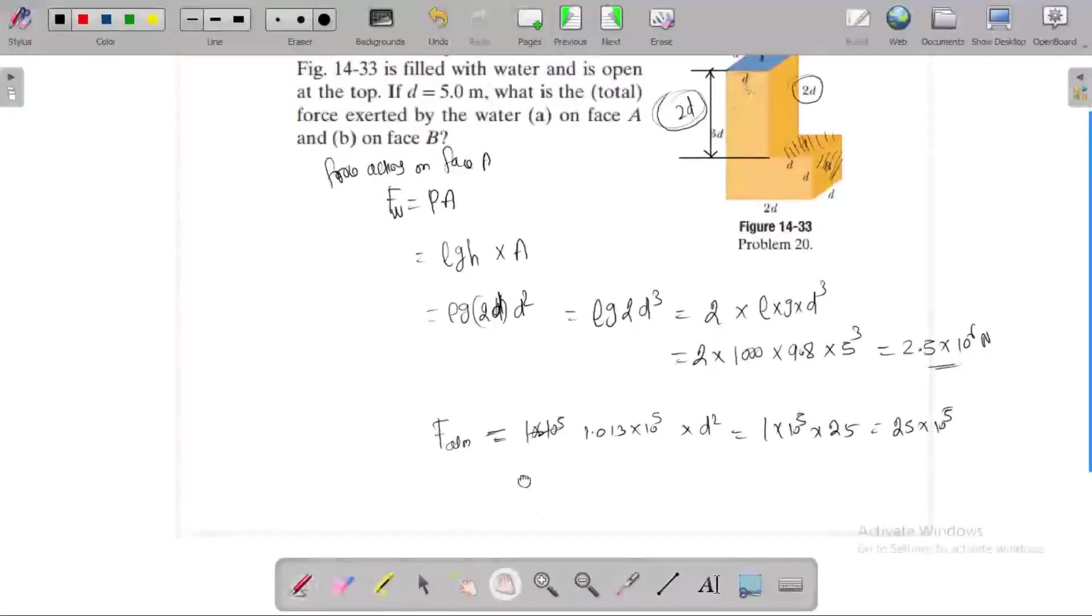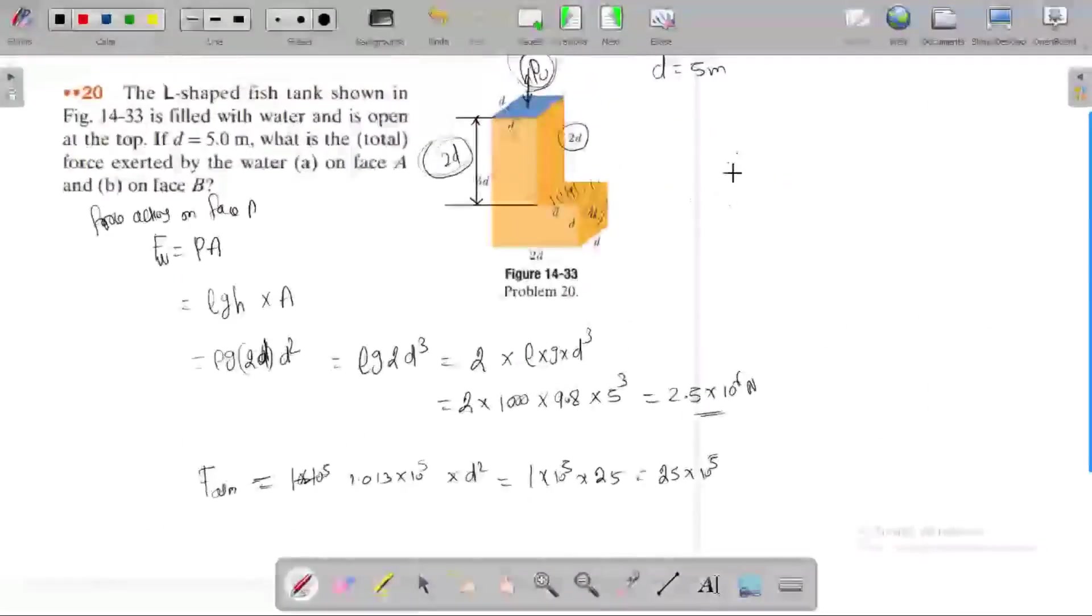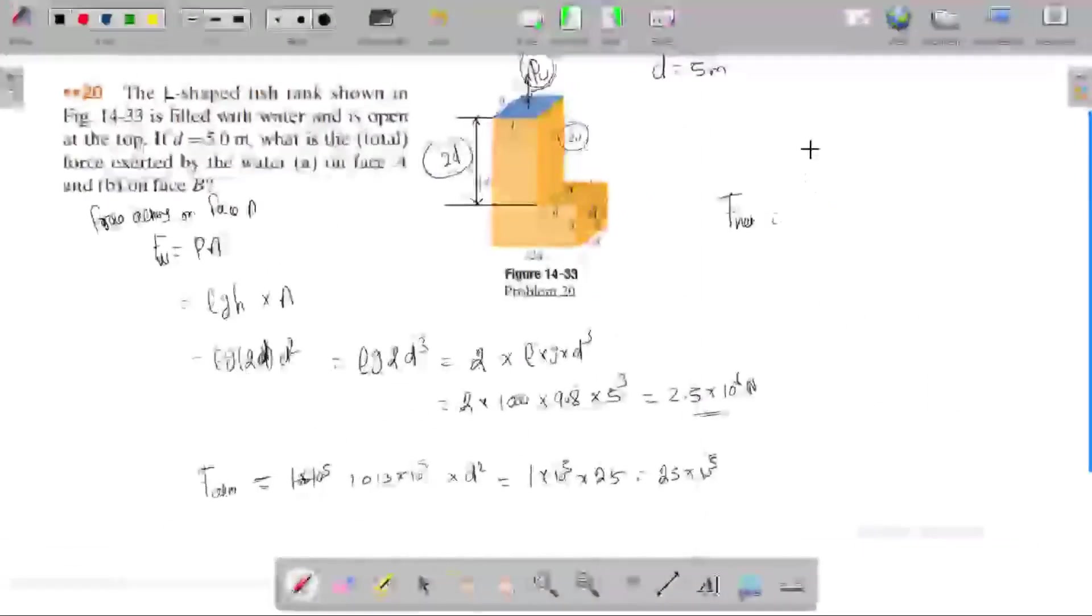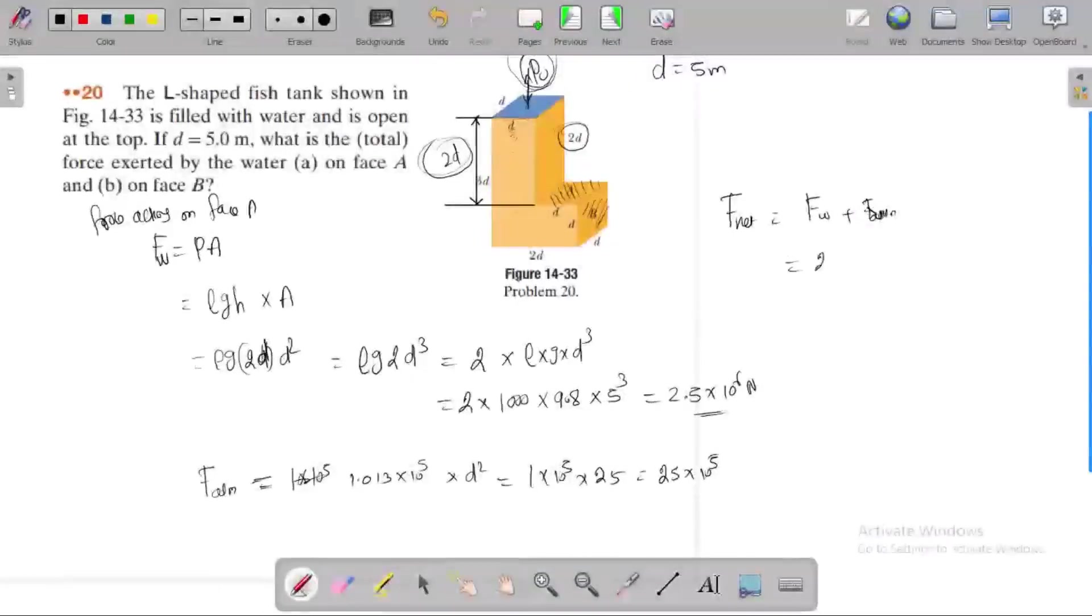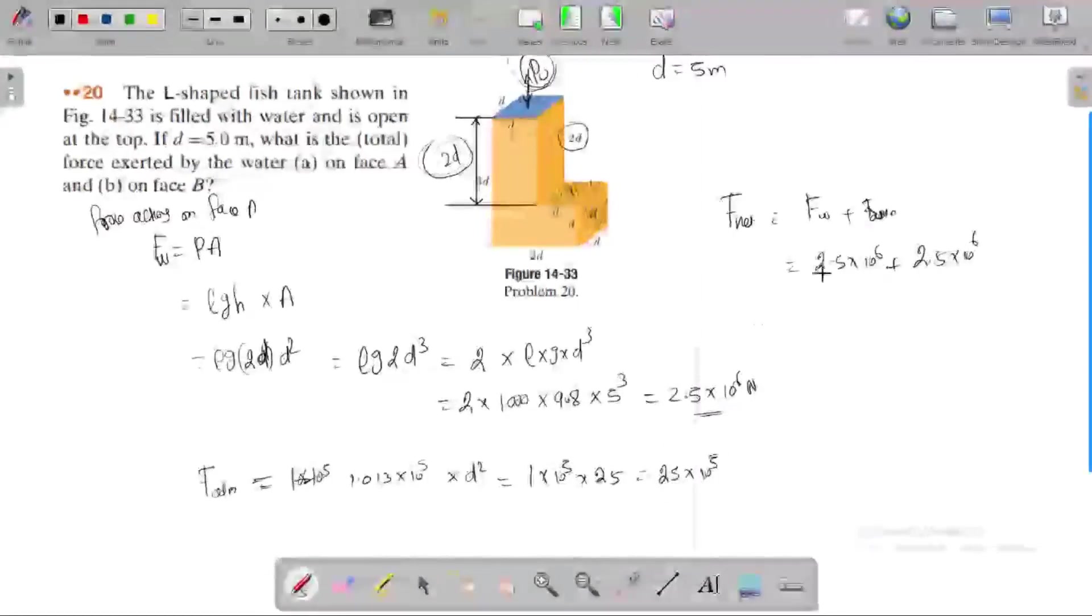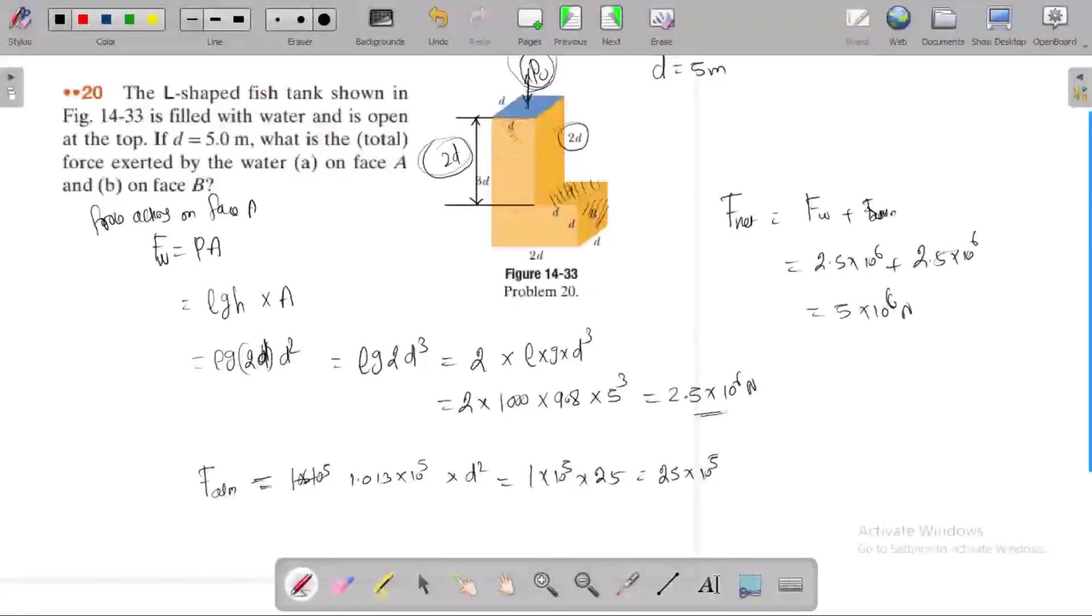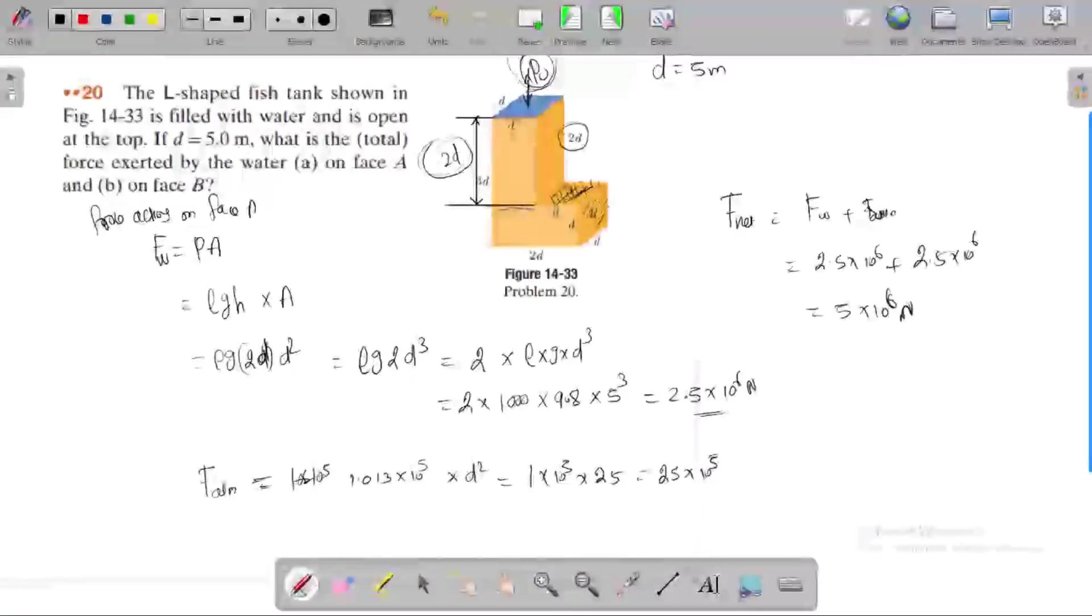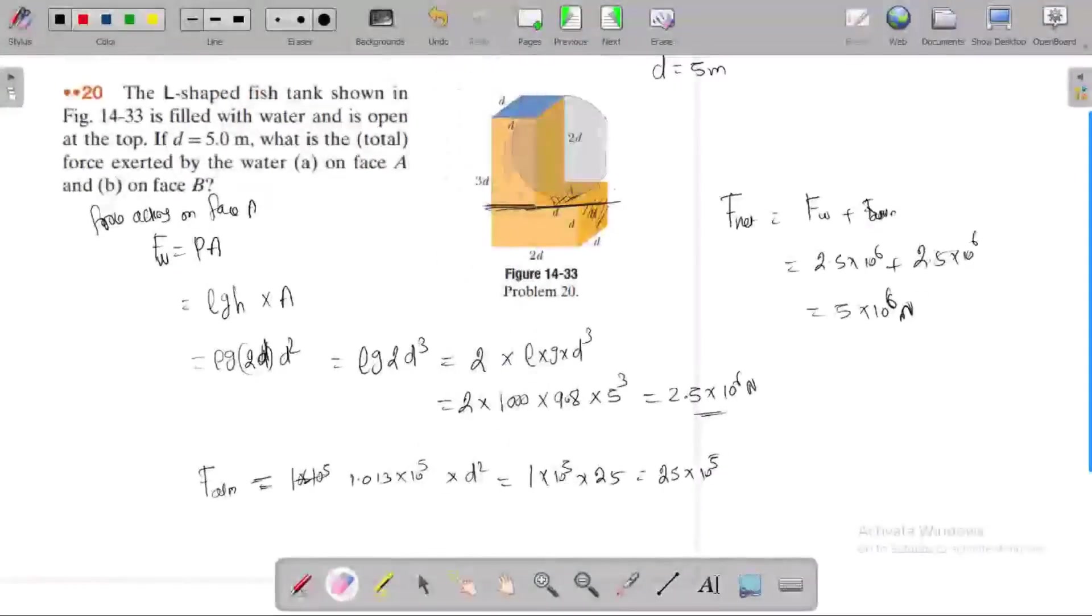What is the net force acting on face A? Net force is equal to force by the water plus force by the atmosphere. We get the answer, this amount of force acting on this face. Next we want to find what is the force acting on face B.